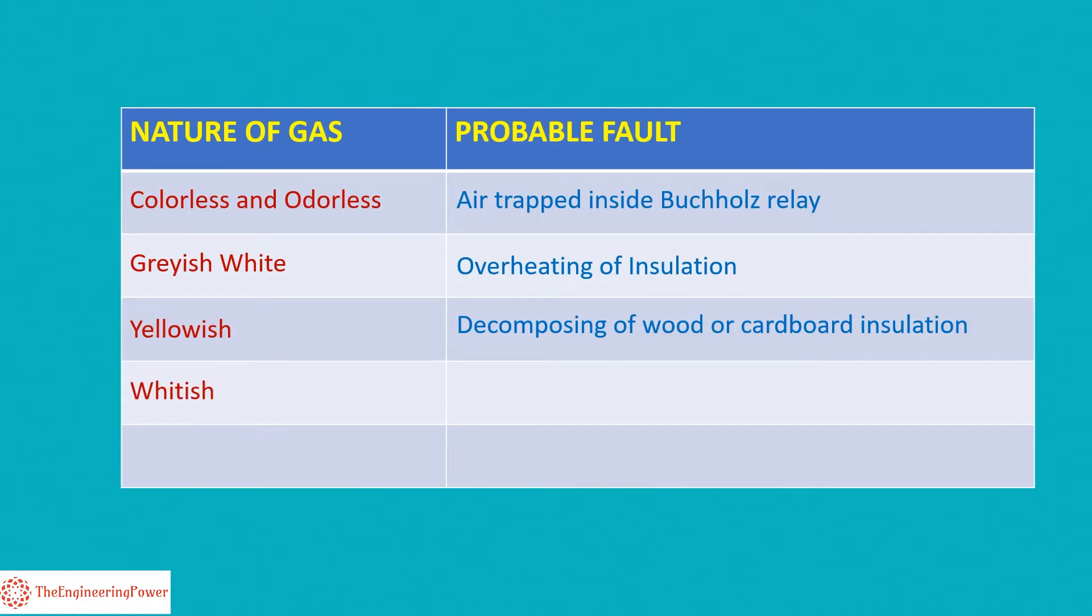Whitish color of the gas means that there is electric arcing in contact with paper, cotton, and silk, whereas black color means that there is free arcing in the oil.